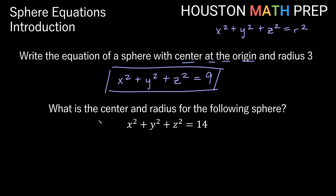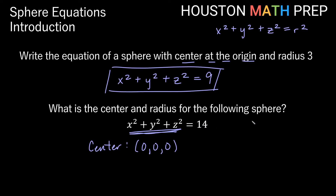Going the other direction now: what is the center and radius for a given sphere? Since we have x squared plus y squared plus z squared equals r squared, the center is at the origin, 0, 0, 0 in 3D space. And 14 is not the radius — it's r squared. So if r squared equals 14, then the radius is actually the square root of 14.